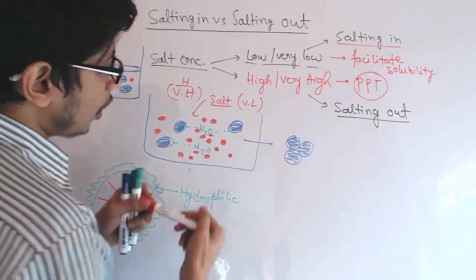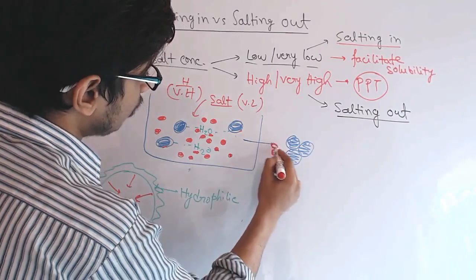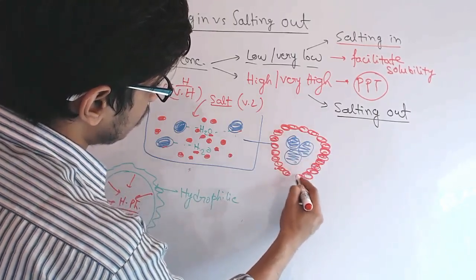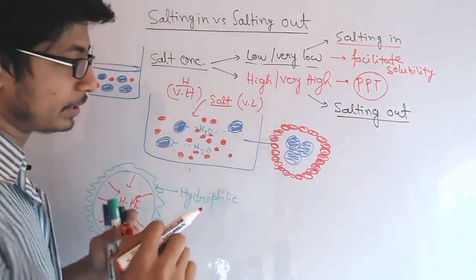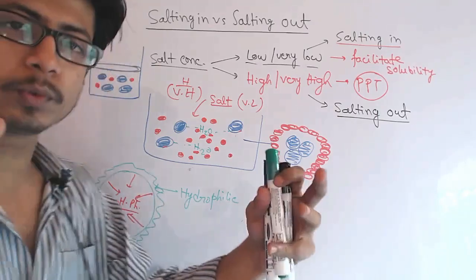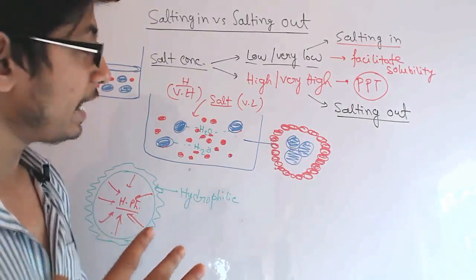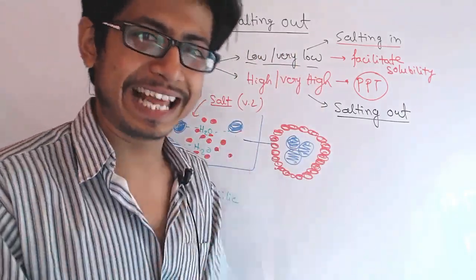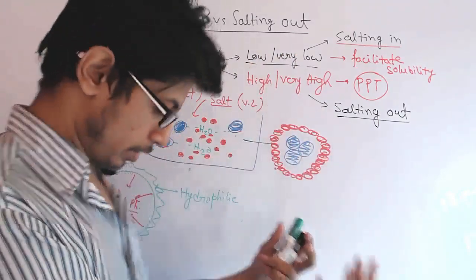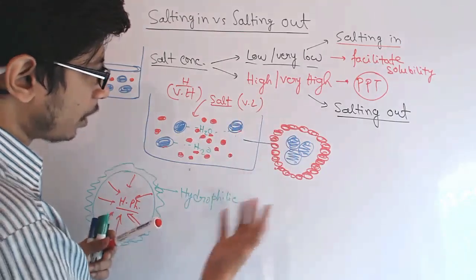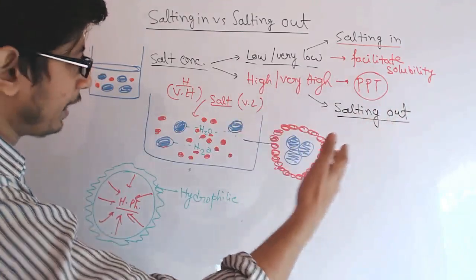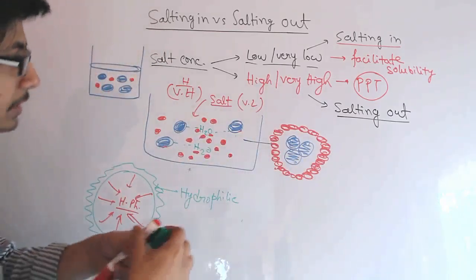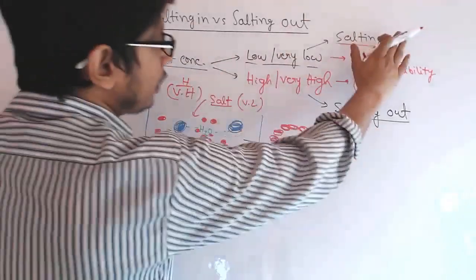Water molecules along with salt start to create a hydrophilic shell or water shell surrounding those proteins, but they are not interacting directly with the proteins anymore. As a result, proteins come close to each other and start forming interactions with themselves. They bind together, turning into a huge mass — the protein gets precipitated down because solubility decreases. The proteins get separated from the rest of the solution, settle to the bottom, and we collect the pellet filled with proteins. This is salting out.